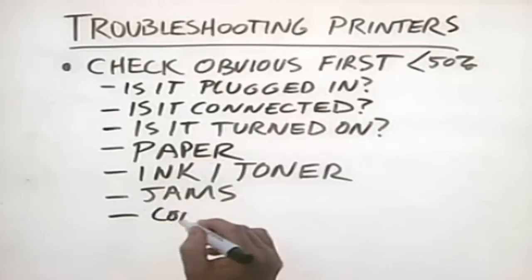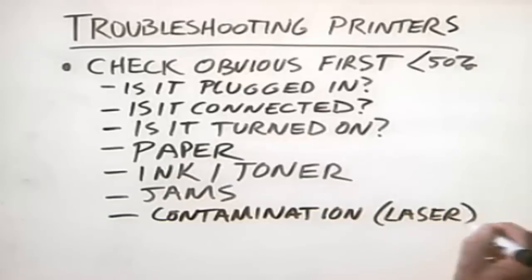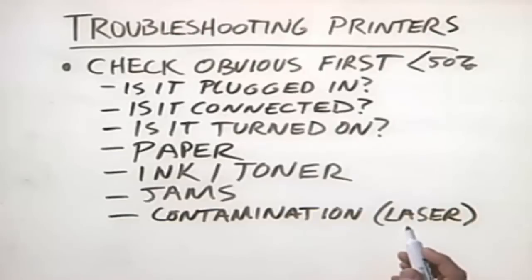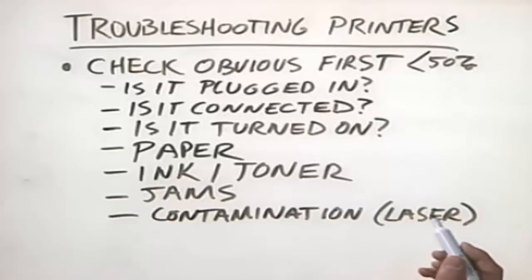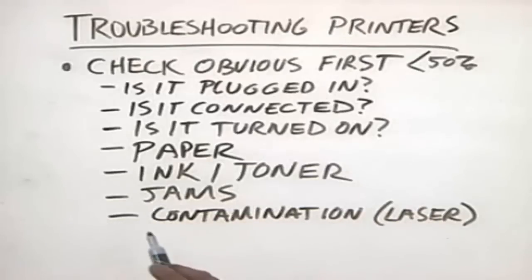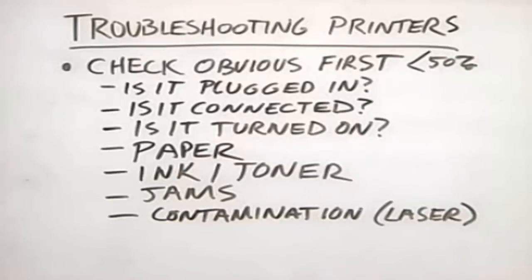Another thing to look for with laser printers is contamination — this is laser only. Laser printer toner cartridges leak toner. Remember that toner is nothing more than ground up little bits of plastic, and it leaks those bits all over the inside of the printer. If that excess toner starts to build up, you can have all kinds of problems. You'll end up with gunky stuff all over the printouts. If that's the case, you might need to get your anti-static vacuum cleaner and vacuum all that contamination out of the inside of the laser printer.